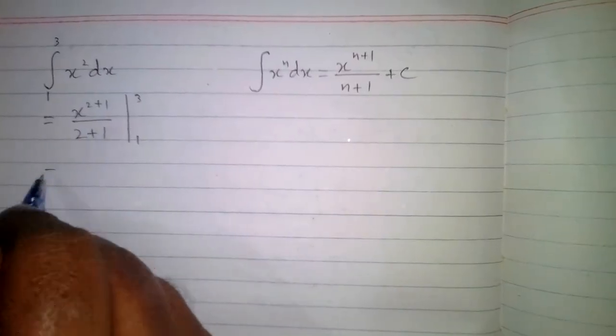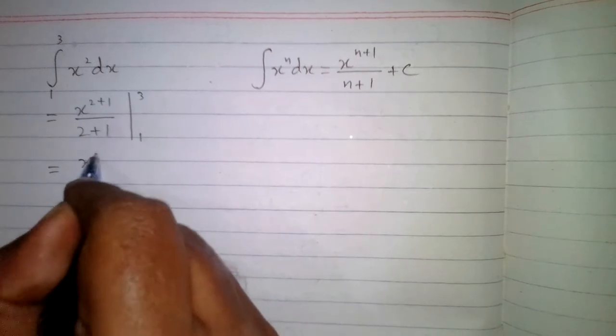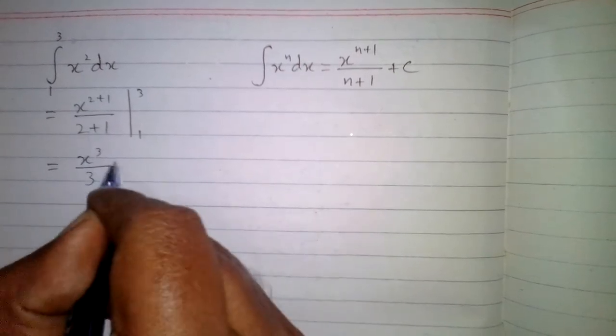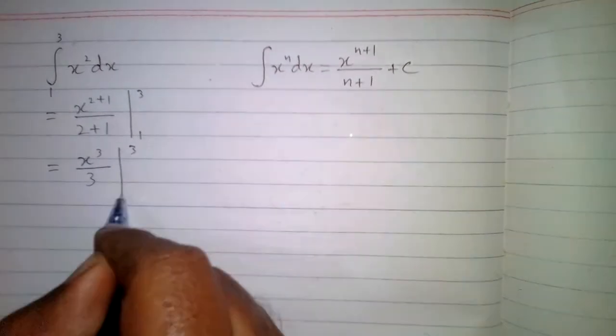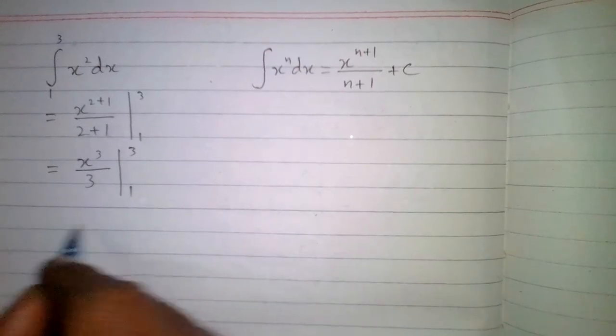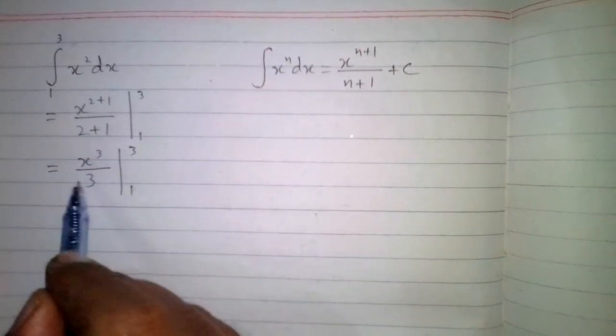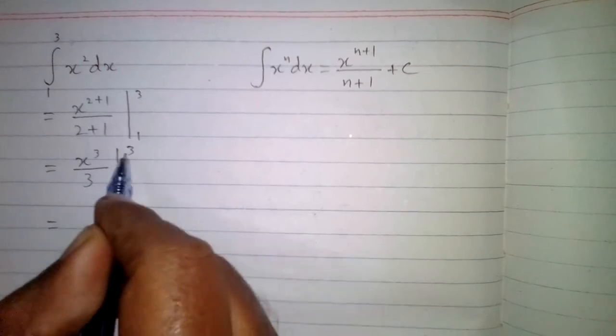Now this will reduce to x cube upon 3 from 1 to 3, and then we will put these values in this function. So first we will put 3 in place of x.